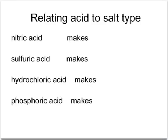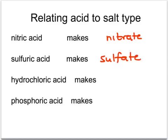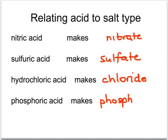Different acids make different salt types. If you were using nitric acid you'd expect to make a nitrate. If you were using sulphuric acid you'd make a sulphate. Hydrochloric acid would make a chloride, and phosphoric acid would make a phosphate.